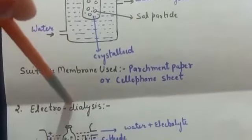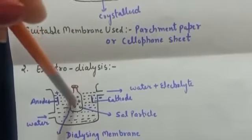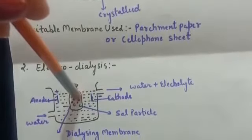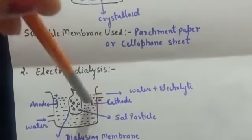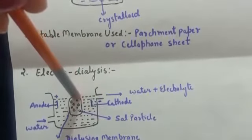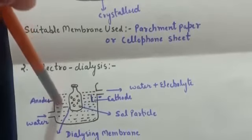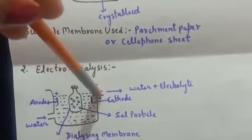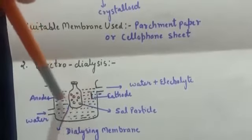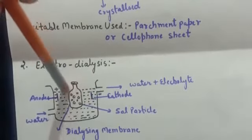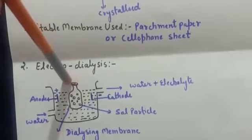In electrodialysis, the bag contains colloids plus electrolytes and electrodes are placed to apply an electric field. The ions migrate toward their respective electrodes, making purification faster, and the bag is left with only colloidal particles. So by this method we can purify our colloidal solution.